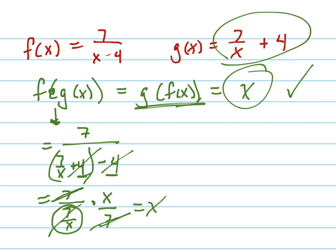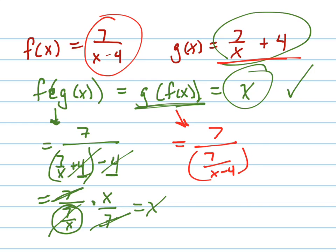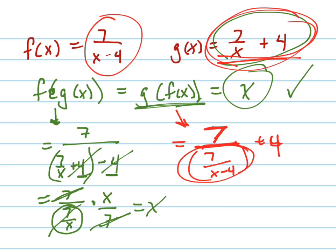But now this has to be also the same thing. So let's do this one now. We'll do this one in red. This one is going to be, I'm going to start writing g, but instead of writing x, I'm going to write f of x, which is this. 7 over x minus 4 plus 4. See how I wrote? So here's g was 7 over x plus 4. I wrote that, but then instead of writing x, I wrote f of x in there.